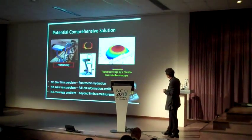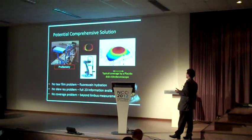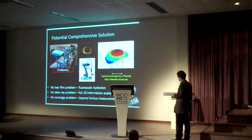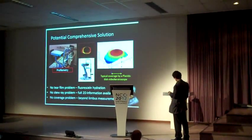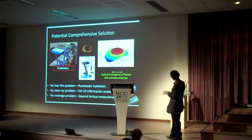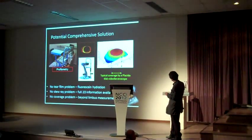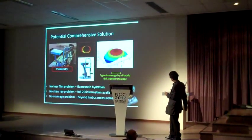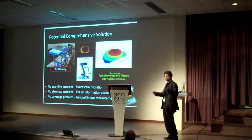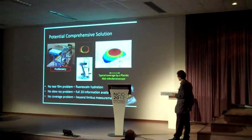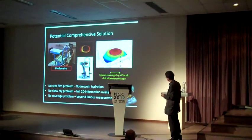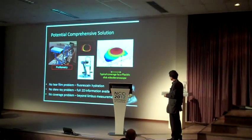The answer to all these problems — the tear film problem, the skew ray problem, and the coverage problem — is probably profilometry. Using profilometry, we can get an image from which we derive topography. The typical coverage by the Placido disk ends here, but profilometry goes further beyond the limbus. There is no tear film problem because we use fluorescein, which hydrates the eye. There is no skew ray problem because we have information in both X and Y directions. And we have no coverage problem.